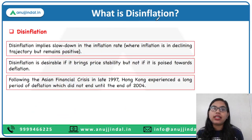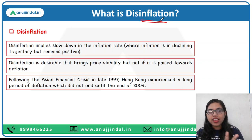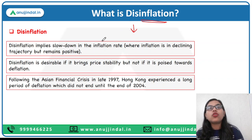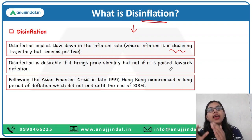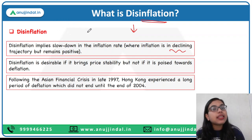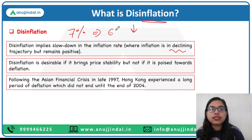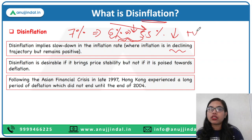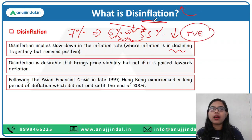Now let's move forward and talk about disinflation. What is disinflation? Disinflation refers to the slowdown in the inflation rate — inflation is increasing, but at a declining rate, and it remains positive. Suppose inflation is now seven percent, next year it is six percent, then five point five percent. This is a reduction in the inflation rate in a declining trajectory, but inflation remains positive. That is known as disinflation.